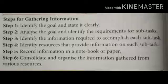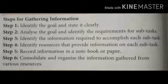Step 4: Identify resources that provide information on each subtask. Step 5: Record information in a notebook or paper. Step 6: Consolidate, or combine and organize, the information gathered from various resources. So these are the 6 steps for information gathering.